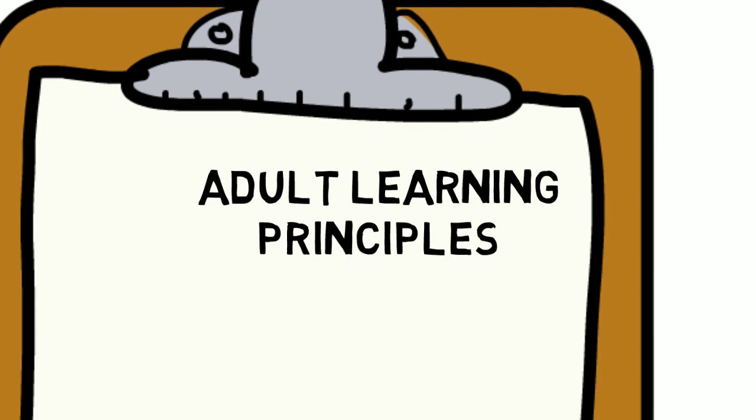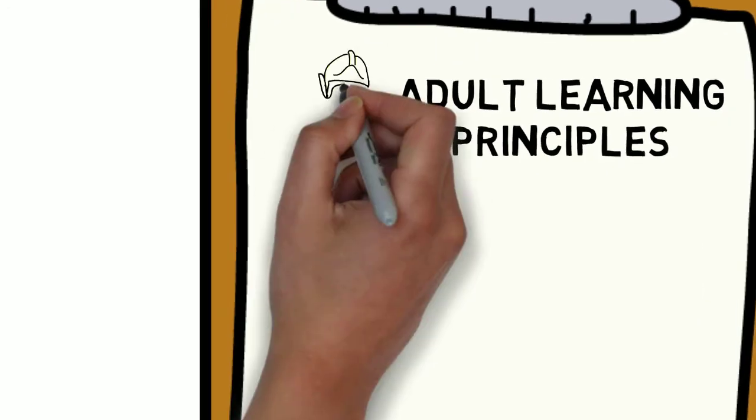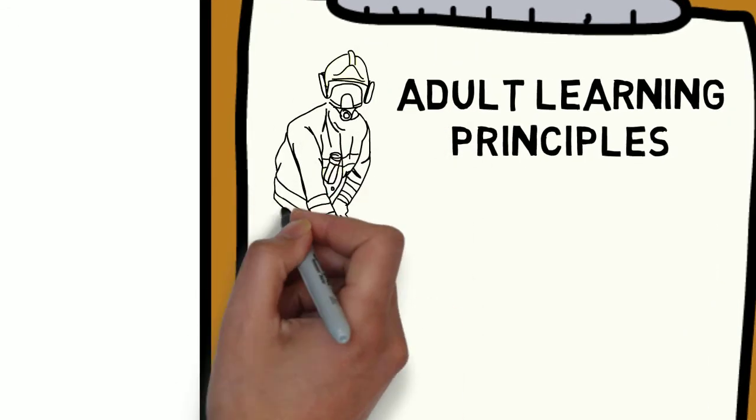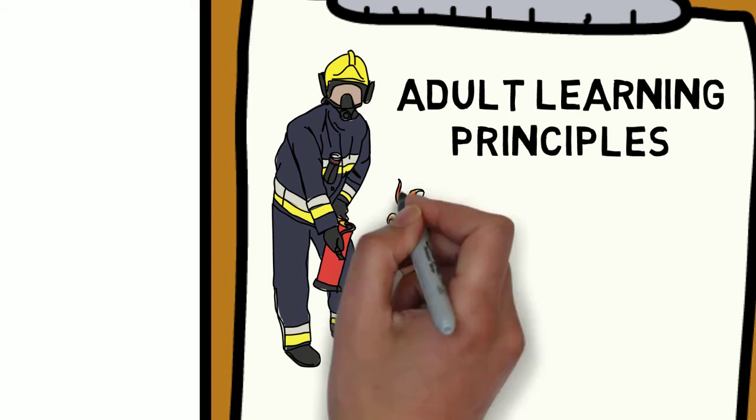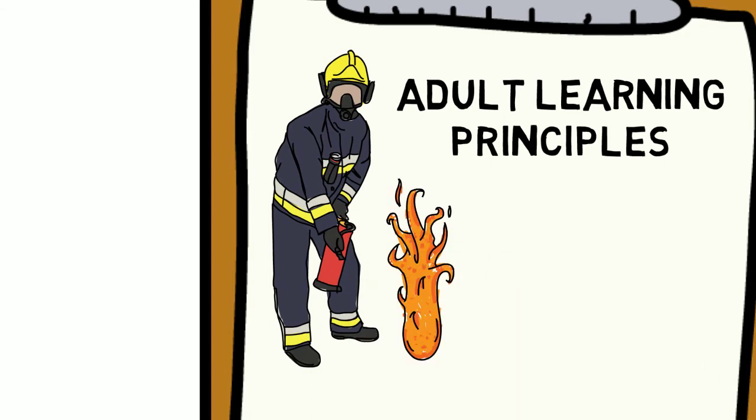It is important to remember the principles of adult learning. Your stories should be based on real situations. Use images or videos of people and places so that they can start to relate to them.